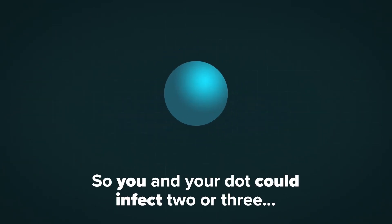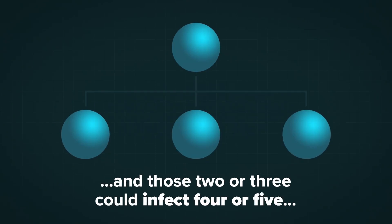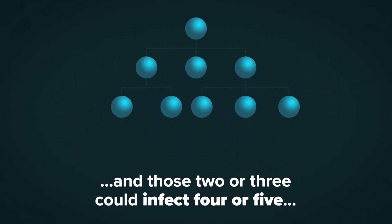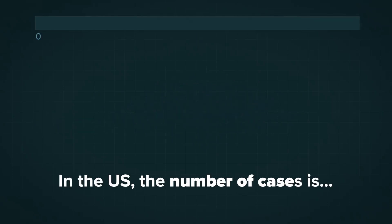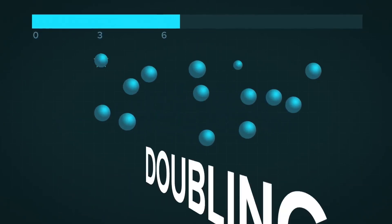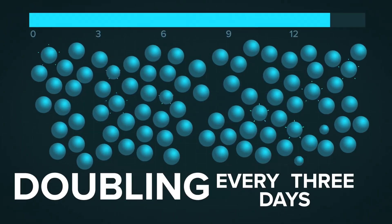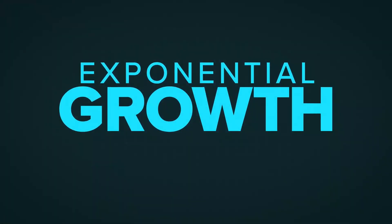So you and your dot could infect 2 or 3. And those 2 or 3 could infect 4 or 5. And so on and so on. In the U.S., the number of cases is doubling every 3 days. A true case of exponential growth.